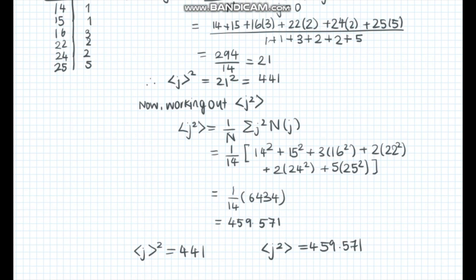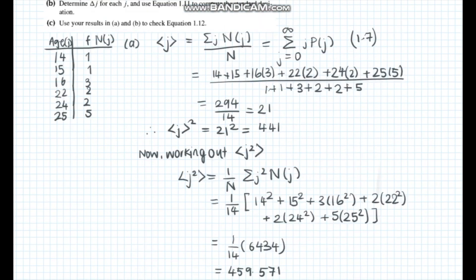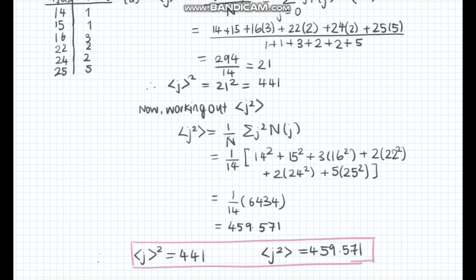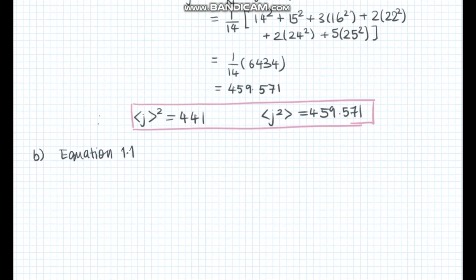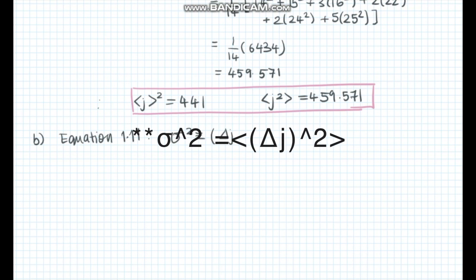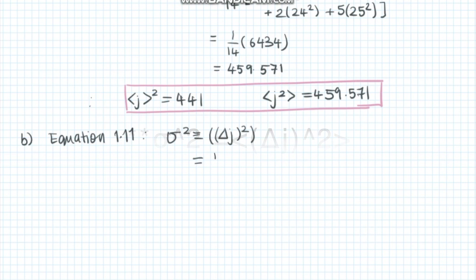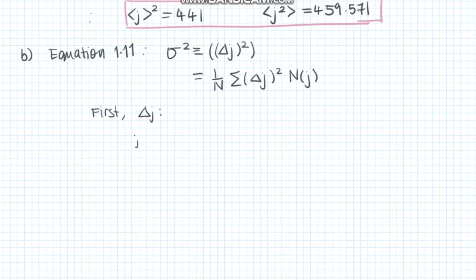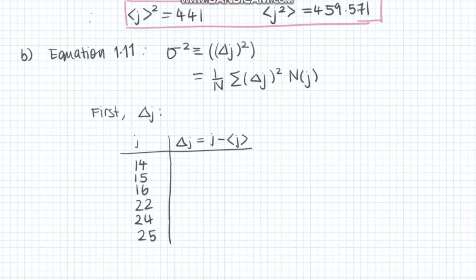Part b asks us to find delta j and then use it to work out the standard deviation sigma using equation 1.11, which is actually the equation for sigma squared — the variance of the distribution. Equation 1.11 gives us sigma squared as the average of delta j squared, but it can also be expressed as a summation. Delta j is a measure of how far each outcome deviates from the average calculated in part a, which is 21. We work this out for each outcome.